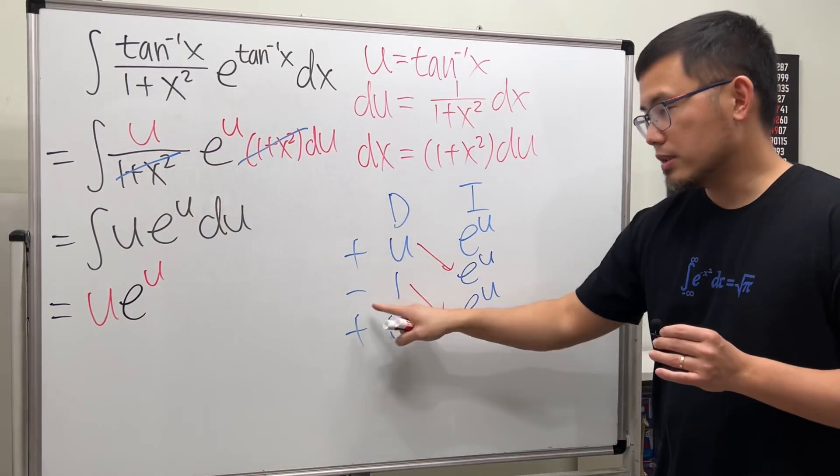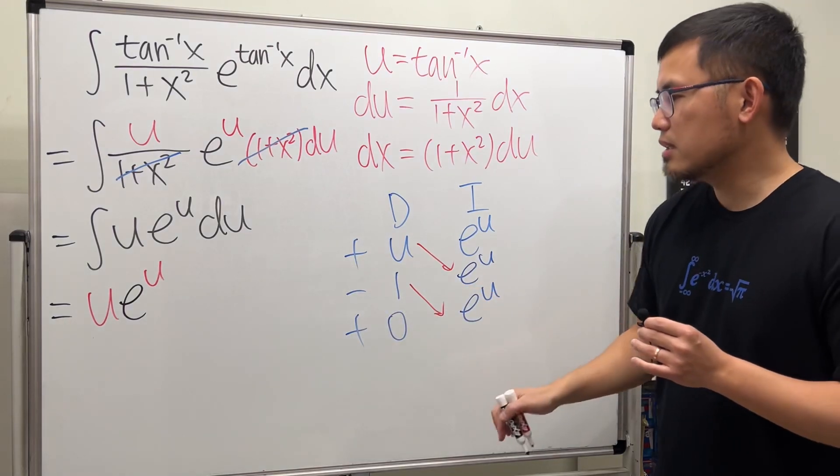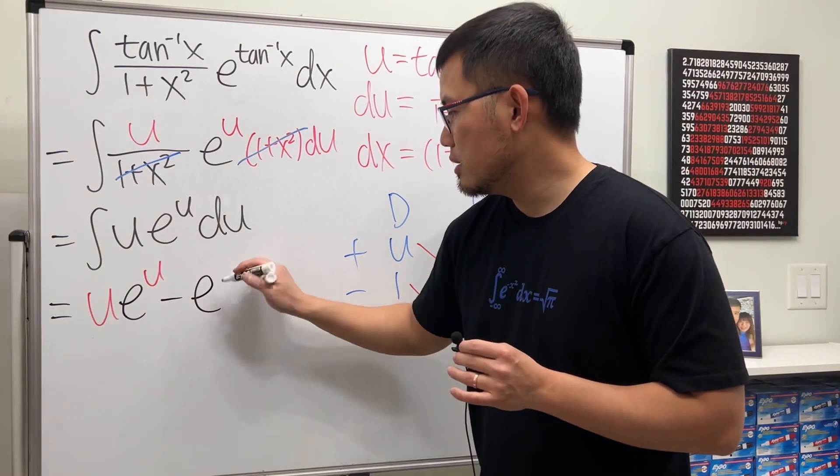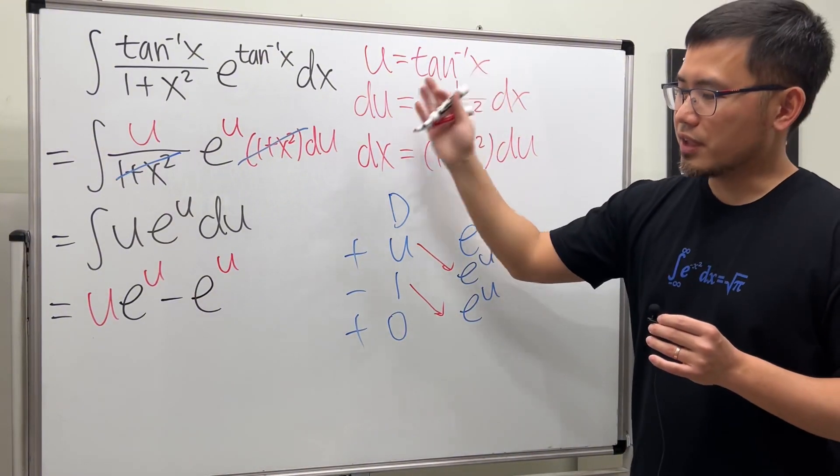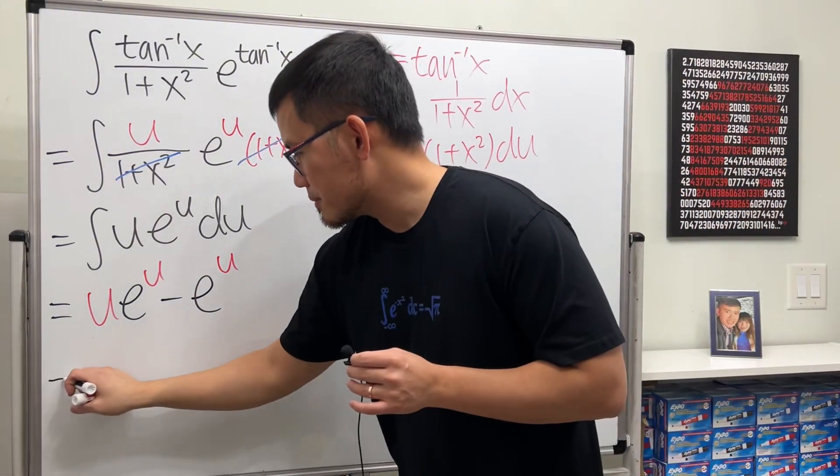So let's see. We are going to get u times e to the u, and then minus one, so it's negative. So this times that is minus e to the u.